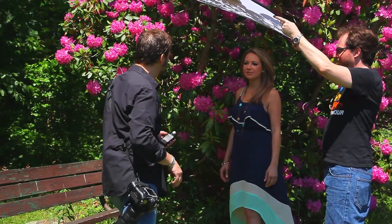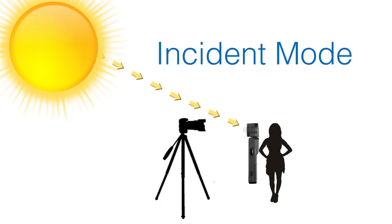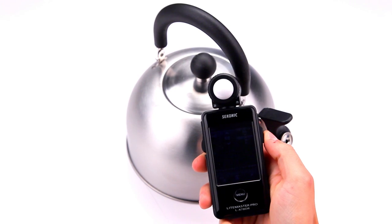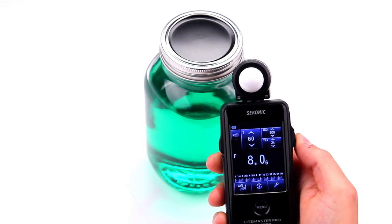Incident mode measures the light falling on the subject and uses the lumisphere — the white dome — to measure the light volume. Incident mode is the most reliable method for measuring scenes because it reads only the volume of light and not the characteristics of the light, such as texture, color, reflectivity, or translucent qualities.